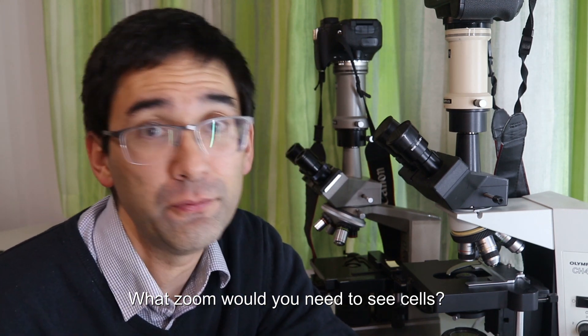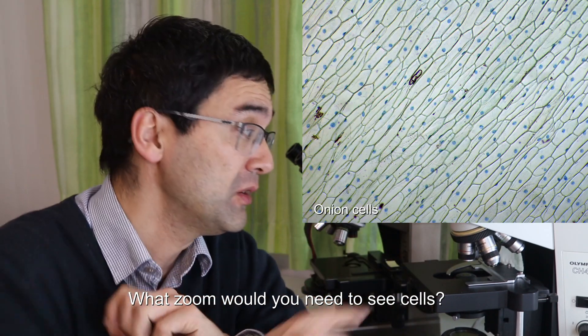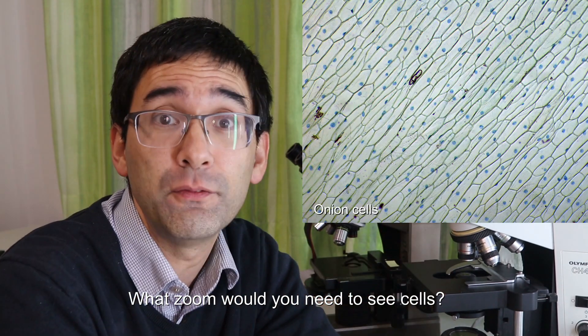Not a lot. I mean, if you look at onion cells, you can already see them with a four times magnification and a 10 times eyepiece. So a total magnification of 40 times is already enough so that you can see cells.